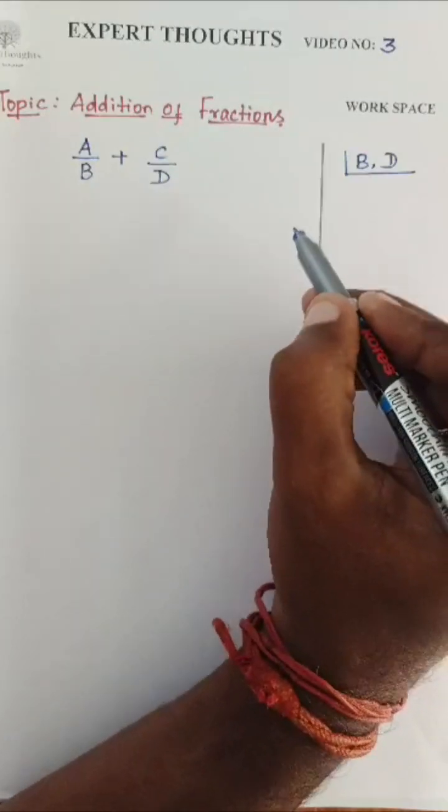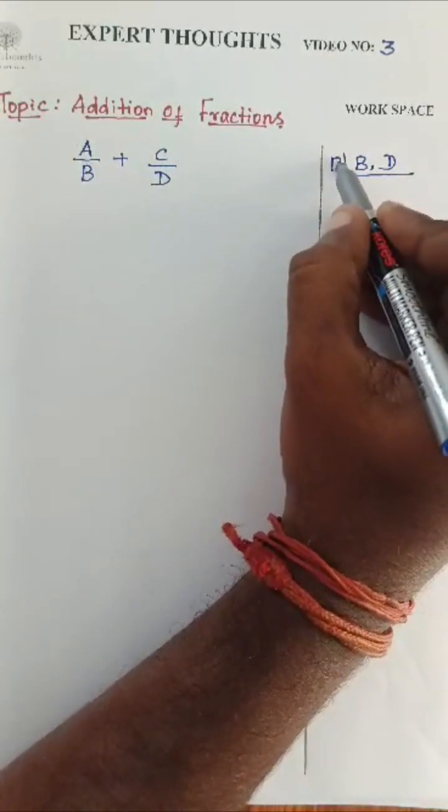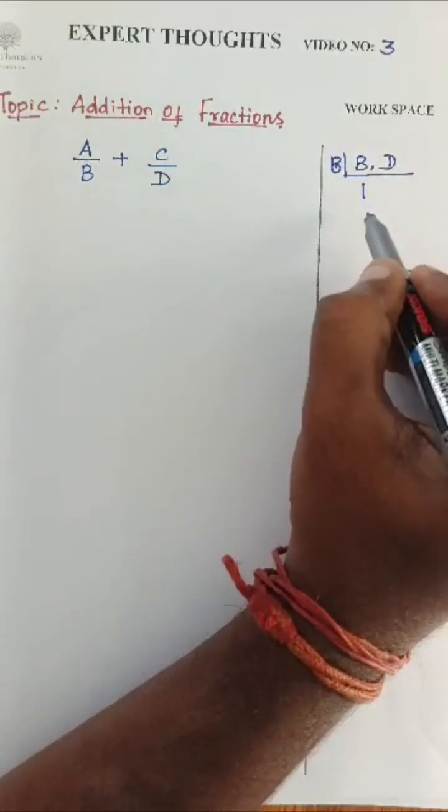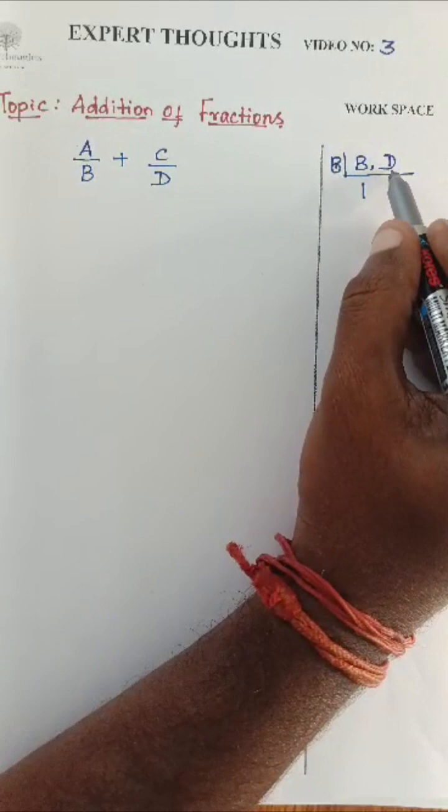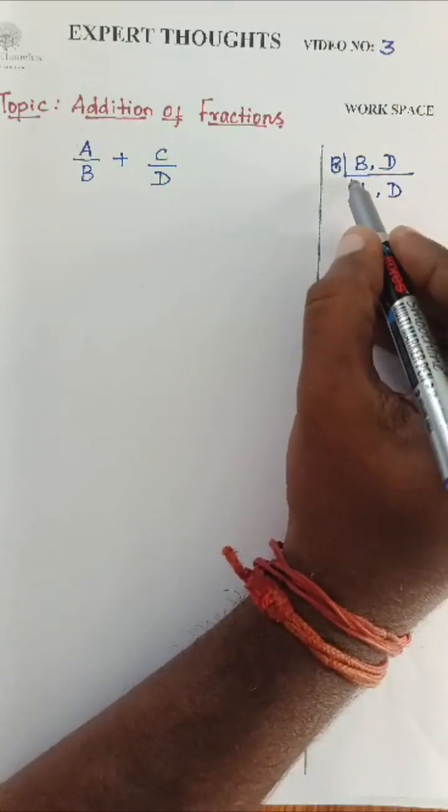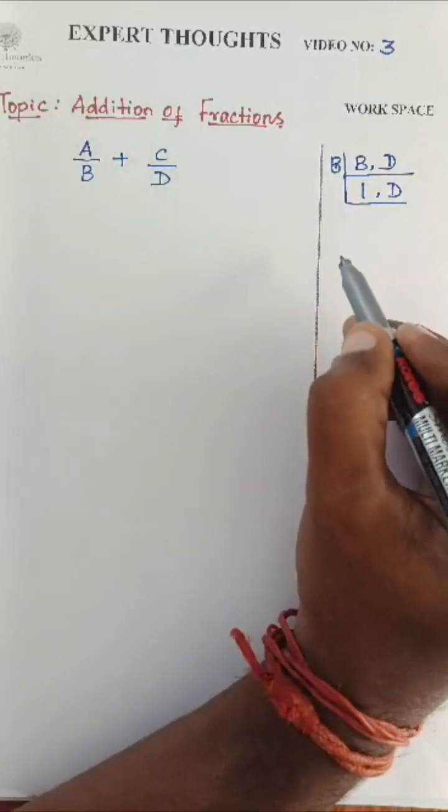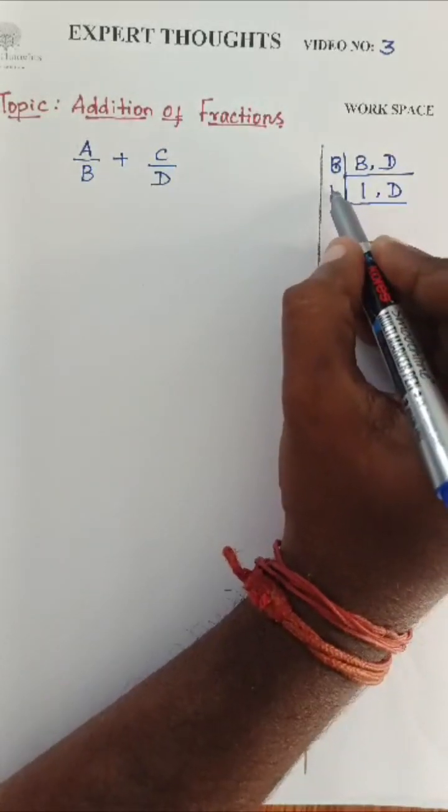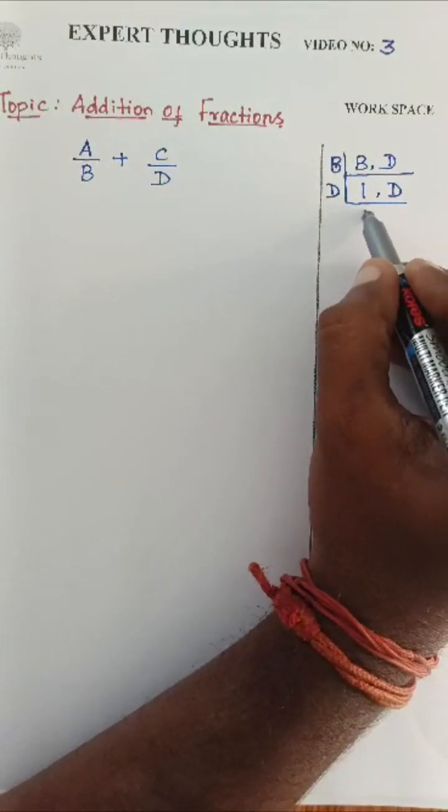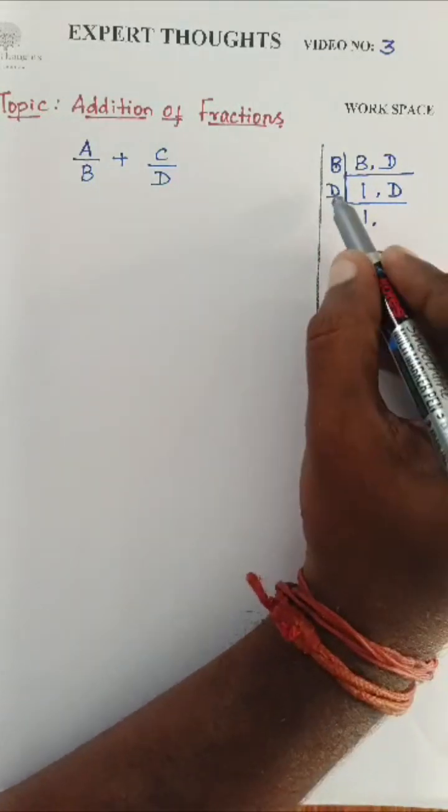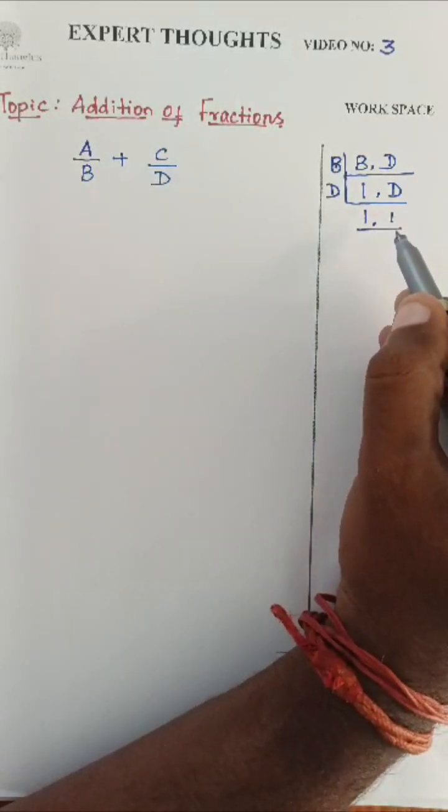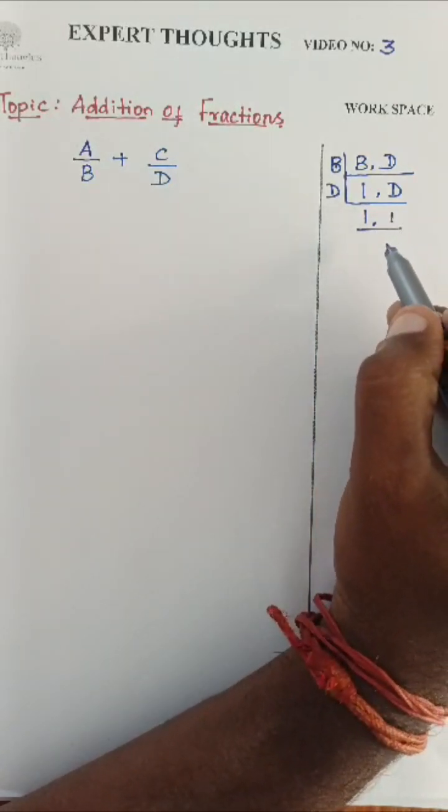First, I will take the term B. You see here, B ones are B. B will not go by D. I will write as it is. Once again, I will take D. Here, it will get 1. I will remain as it is. D ones are D. Till I get 1 and 1, I will repeat the LCM.